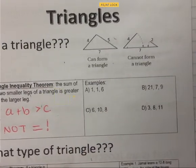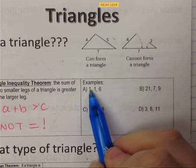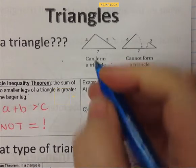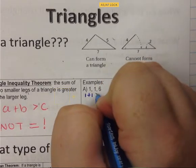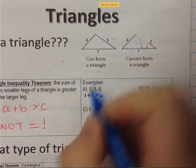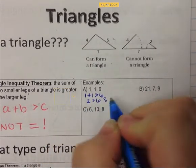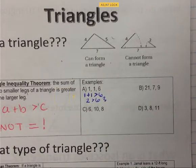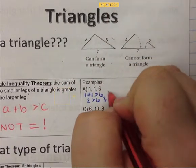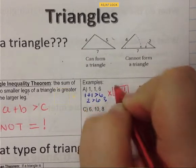Here are four examples — we're going to determine if each forms a triangle. Example A: we look for the two smaller sides, which are 1 and 1. So we do 1 plus 1, which should be greater than 6. But 1 plus 1 is 2, and 2 is not greater than 6. That is not true, so this is not a triangle.